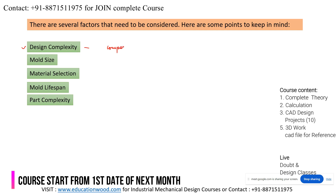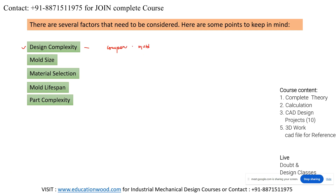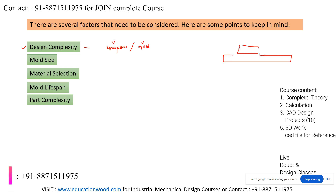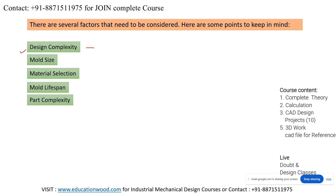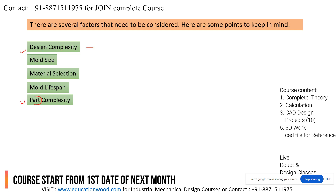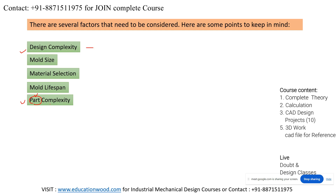Part complexity: we can consider both the component and the mold. For example, if you have a simple component but you are creating a complex type of mold for it, you are increasing the manufacturing time. Design complexity applies to both component and mold. Depending upon the part complexity, you will get critical features, and for those we have to adopt extra machining like EDM, wire cut, or electrode EDM.